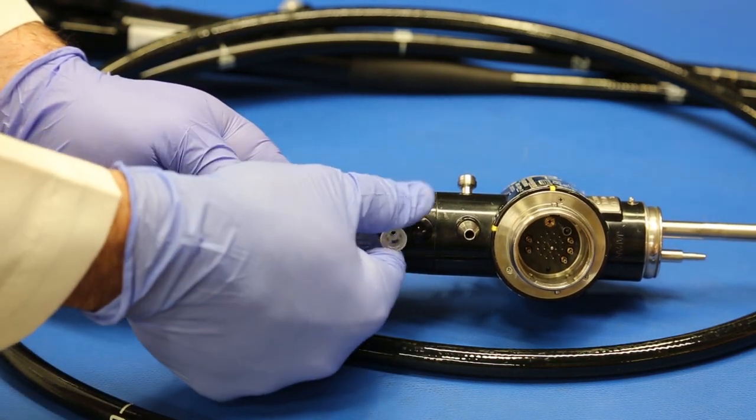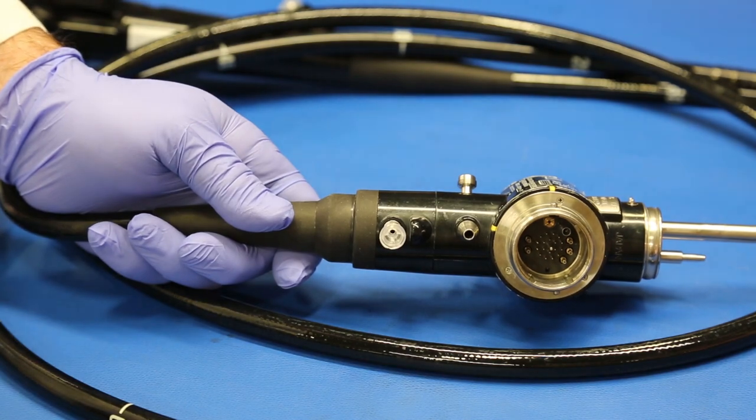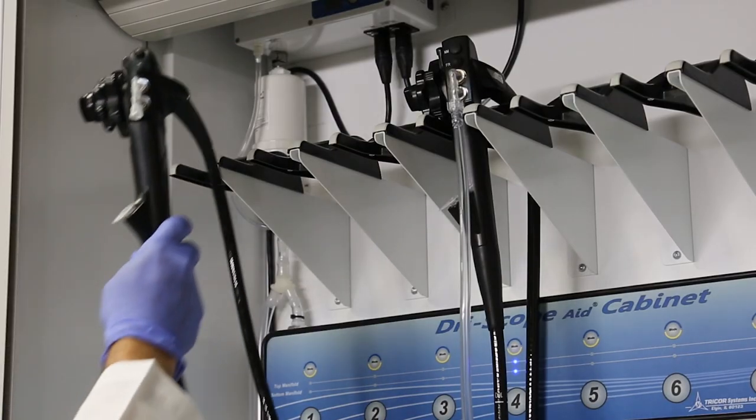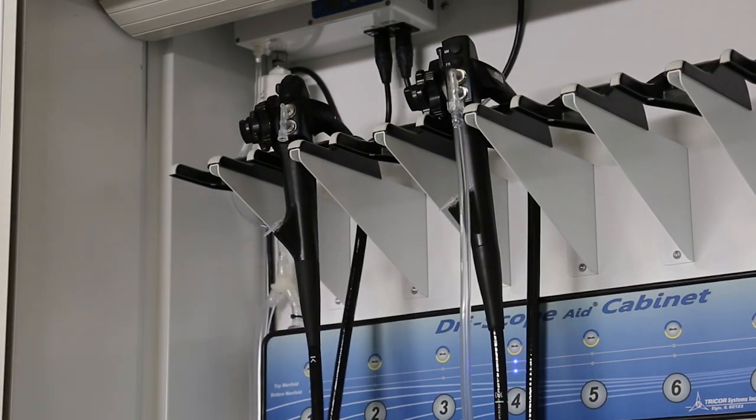The scope is now ready to be moved to the dry scope aid cabinet. After the connectors have been attached, hang the scope in your cabinet.